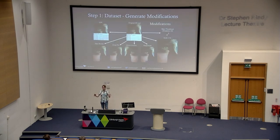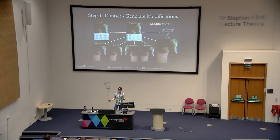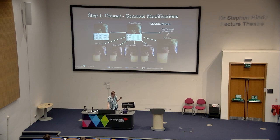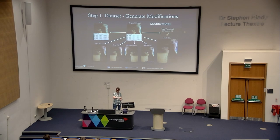So let's walk through the evaluation pipeline. First step: grab some images — you need the dataset. Then generate a bunch of modifications: recompress it, add a border around it, crop it, flip it on the x-axis, add a watermark, scale it up, generate a Windows thumbnail, that sort of thing. We can look at them and say yes, they're still all the same image. Whether the algorithms agree with us or not is a different thing entirely.